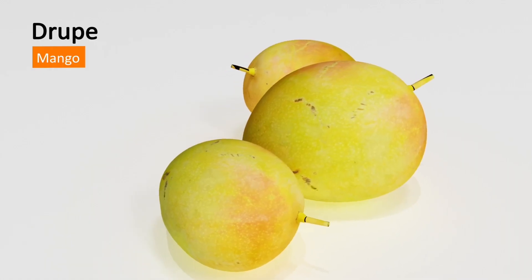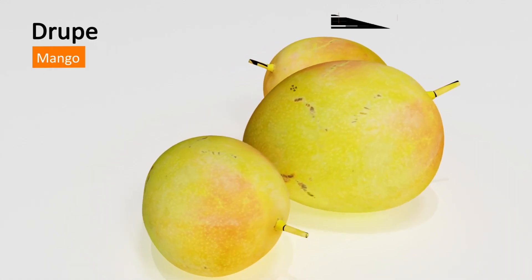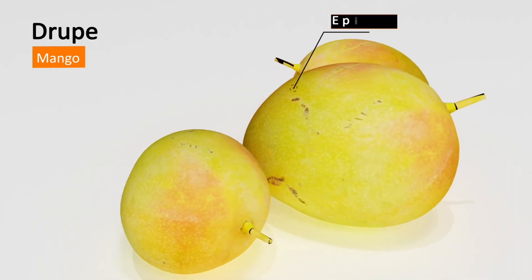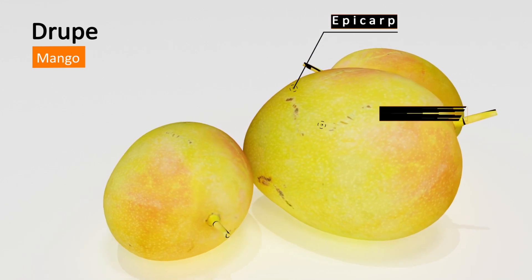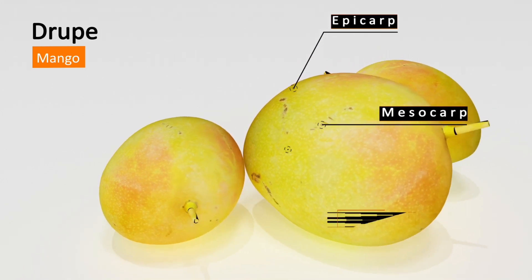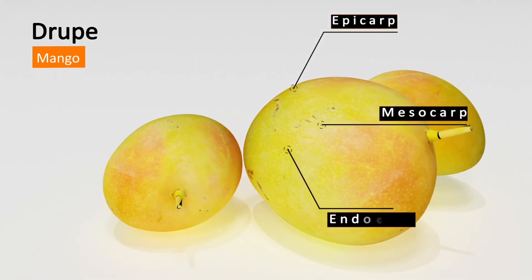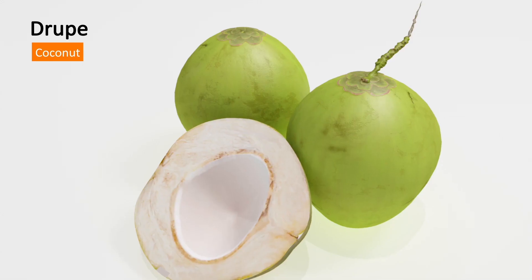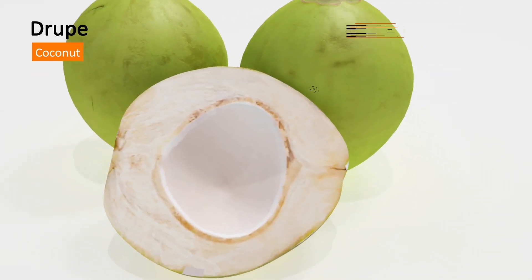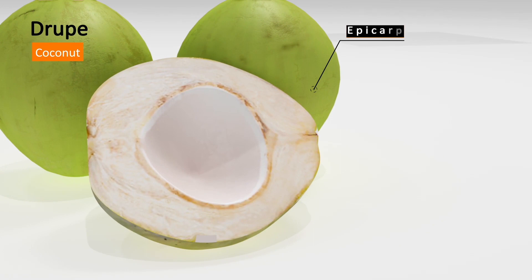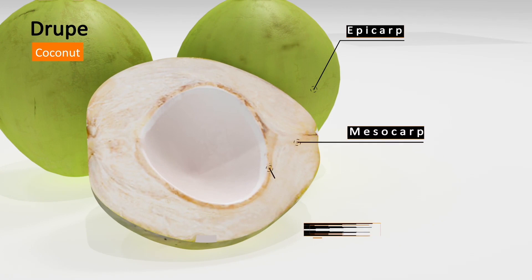In mango, the pericarp is well differentiated into a thin epicarp, fleshy mesocarp, and stony endocarp. In coconut, the epicarp is thin, the mesocarp is fibrous, and the endocarp is stony.